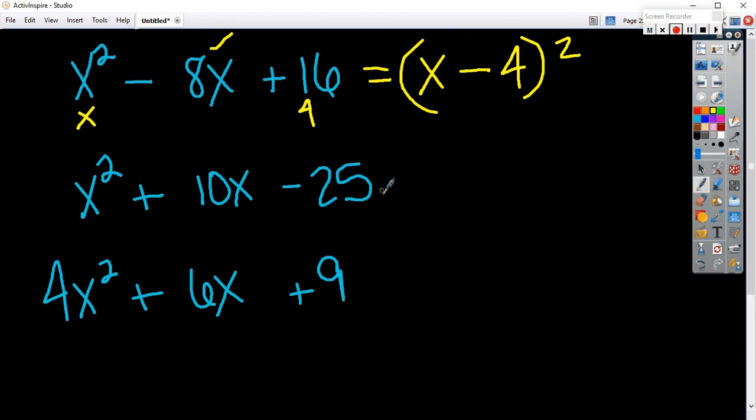How about here, the second one? Is that a perfect square trinomial? Why? Second sign is a plus. This right here keeps it from being a perfect square trinomial.